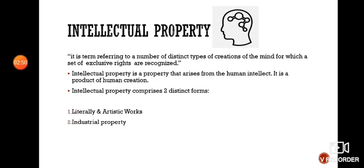What is intellectual property? It is a term referring to a number of distinct types of creations of the mind for which a set of exclusive rights are recognized. Intellectual property arises from the human intellect — from the human mind. It is a product of human creation. Intellectual property comprises two distinct forms: literary and artistic works, and industrial property.